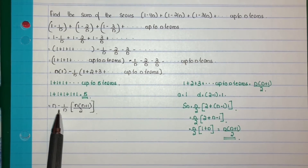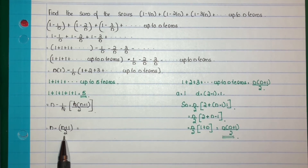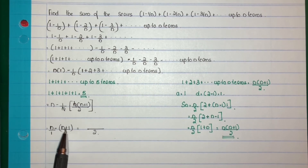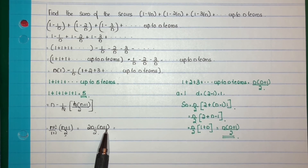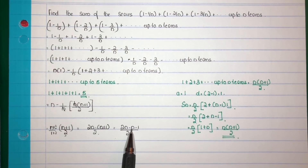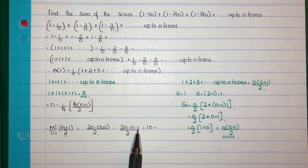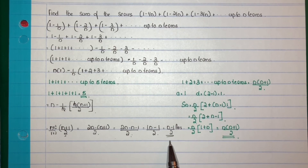Substituting: n minus 1/n into n(n+1)/2 — the n cancels — giving n minus (n+1)/2. Taking LCM of 2: (2n minus (n+1))/2. Opening the bracket: 2n minus n minus 1, which is n minus 1. So the result is (n minus 1)/2. The sum of the given series equals (n-1)/2.